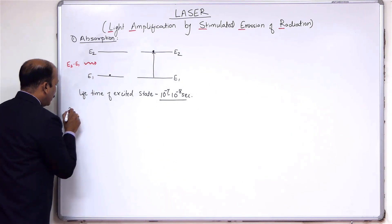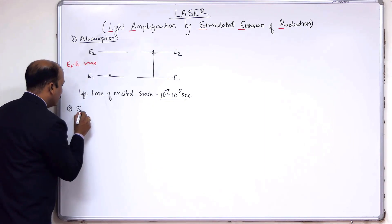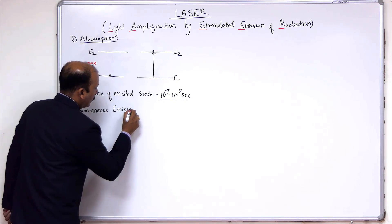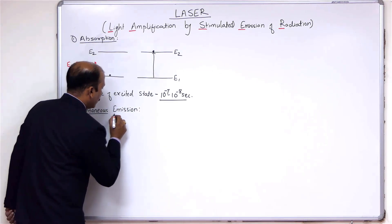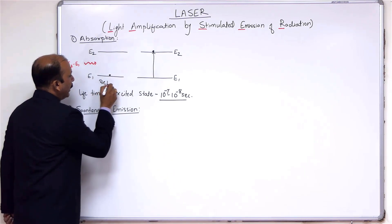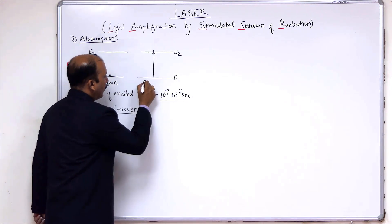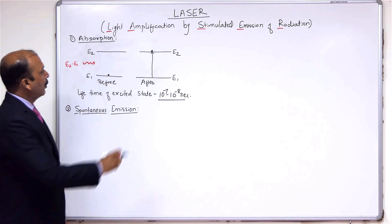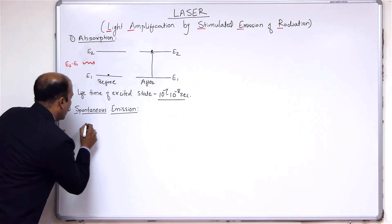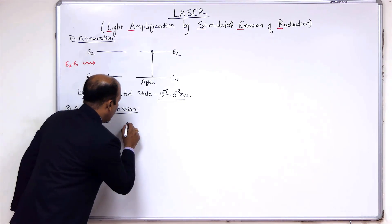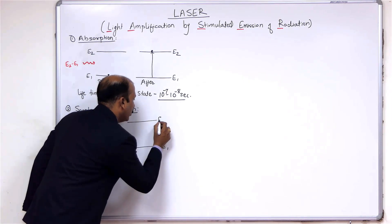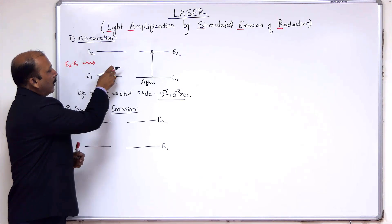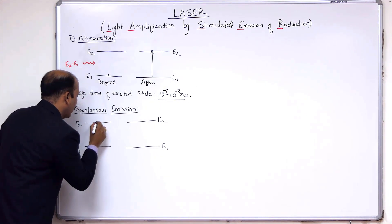The second process involved in laser is spontaneous emission. This diagram shows the state before absorption — electron is in the ground state — and after absorption, the electron goes to the excited state due to incidence of a photon. Now, let us again consider the same two energy level system where E1 is the ground energy level and E2 is the excited state. A photon is incident on the ground level electron, and by absorbing that photon, the electron comes to the excited state.